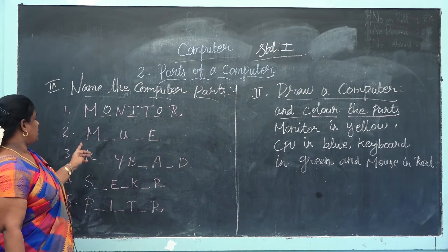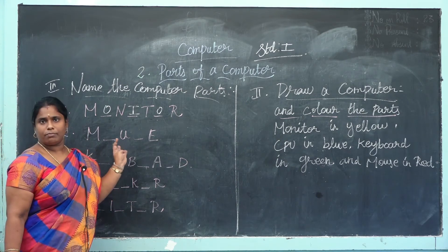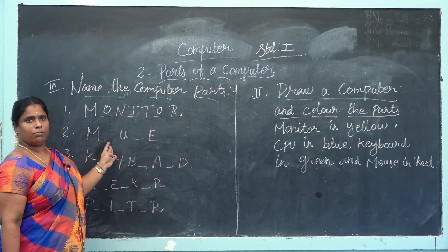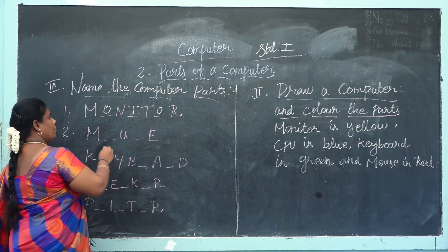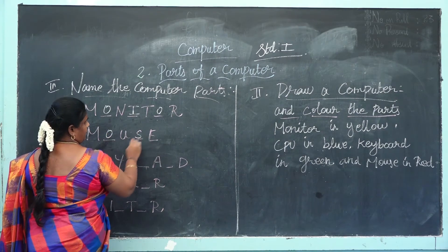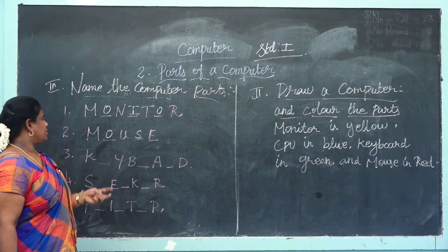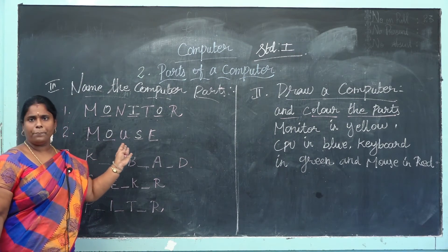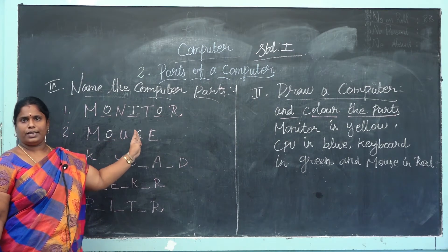What is the next one? Mouse. Mouse spelling is M-O-U-S-E. What is the mouse spelling? M-O-U-S-E.